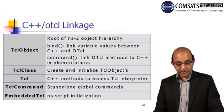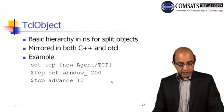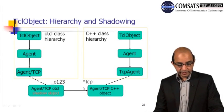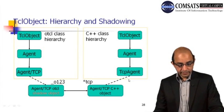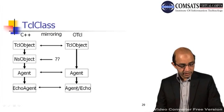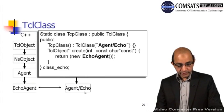The linkage between C++ and OTCL uses the TCL class to create and initialize TCL objects, and C++ methods to access the TCL interpreter. Here is the basic hierarchy for split objects — mirrored in both C++ and OTCL. For example, creating a new TCP agent: in OTCL we have TCL object → agent → agent TCP, and in C++ we have TCL object → agent → TCP agent. This shadowing and mirroring allows the two languages to work together.